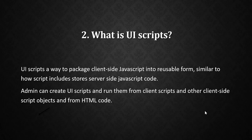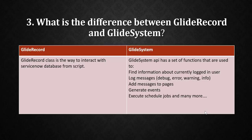The next question is: what is the difference between GlideRecord and GlideSystem? GlideRecord is the class used to interact with the ServiceNow database from script. We use GlideRecord to perform CRUD operations — that is, Create, Read, Update, and Delete. So if you want to perform CRUD operations, you use GlideRecord in your scripts.